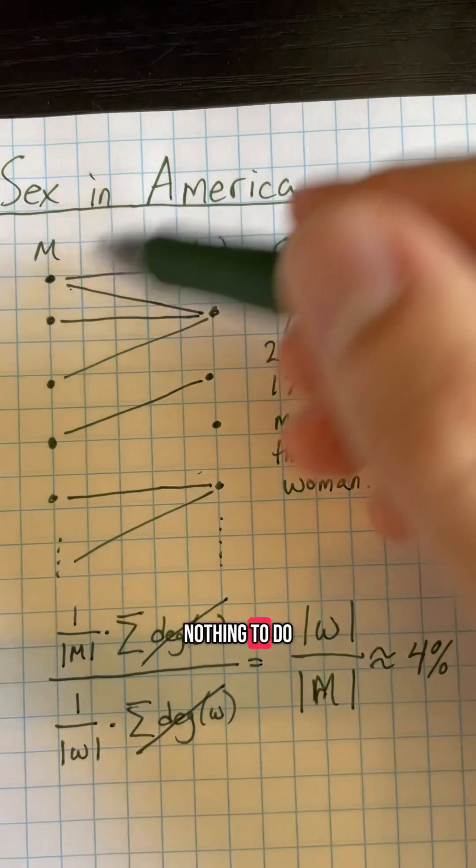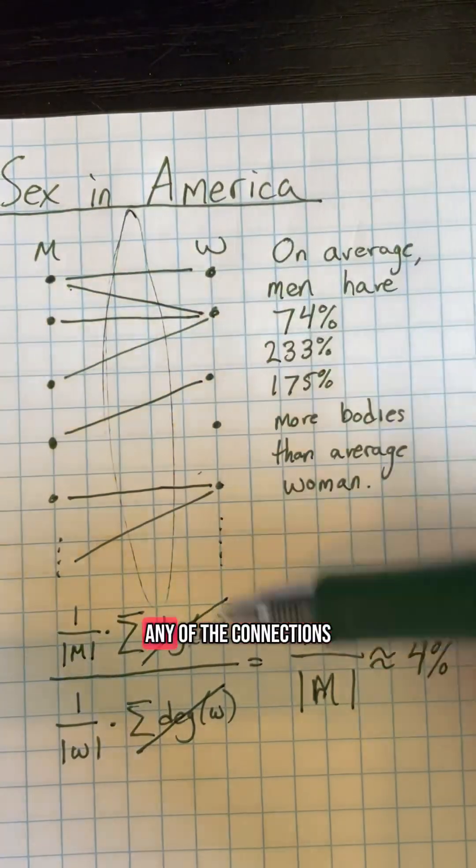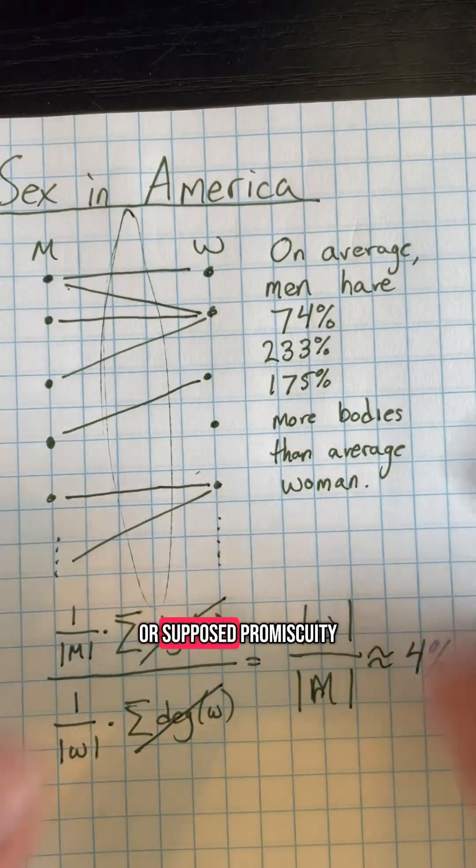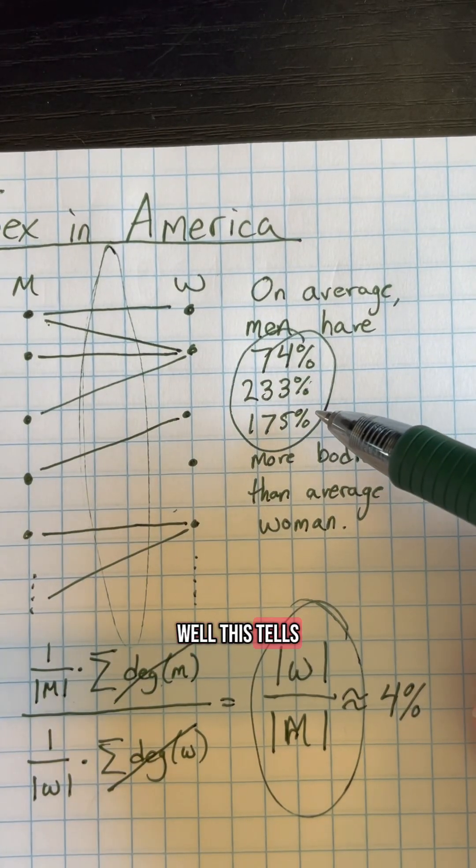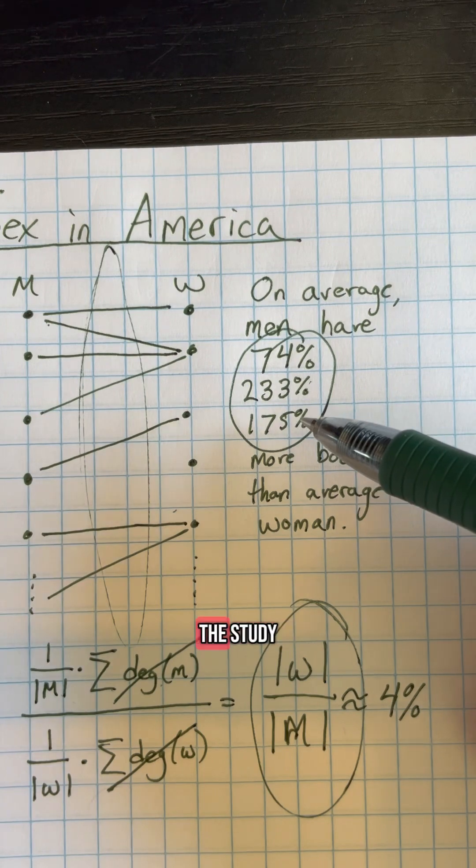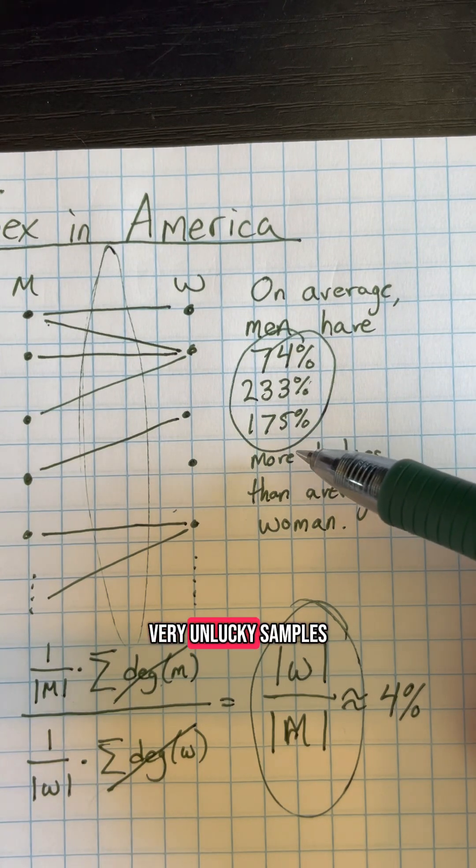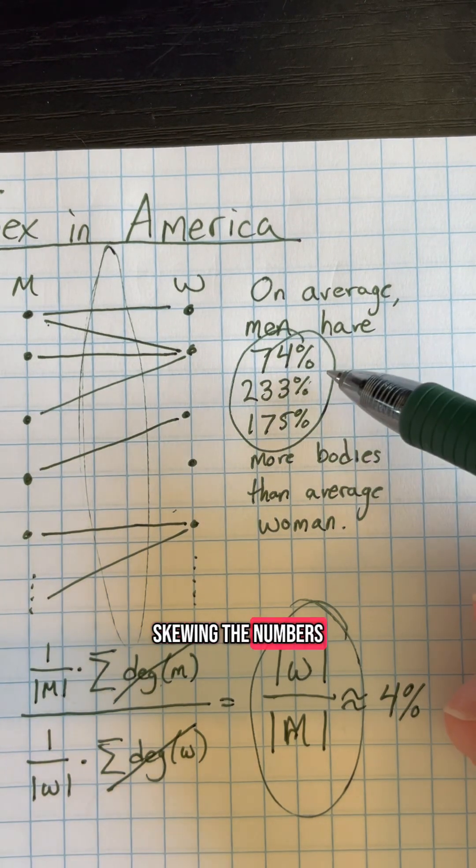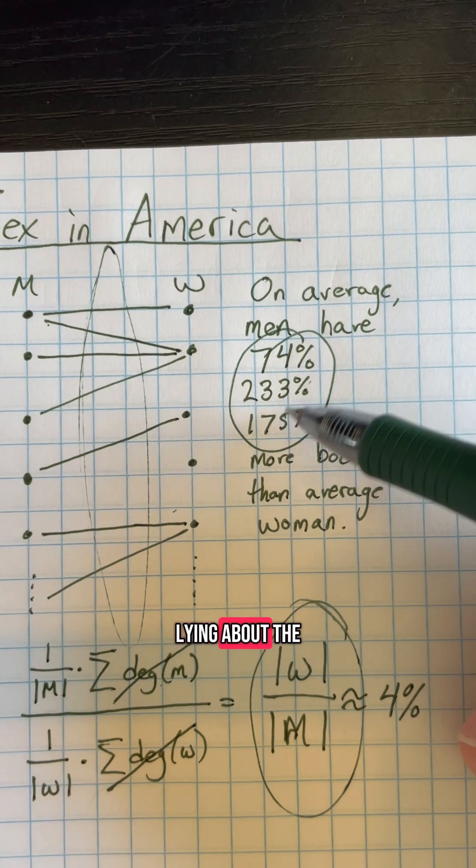And this has nothing to do with the dynamics of any connections or supposed promiscuity of anybody. So what do these numbers and studies tell us? This tells us that the participants in the study are either very unlucky samples that are completely skewing the numbers, or they are lying about the number of partners.